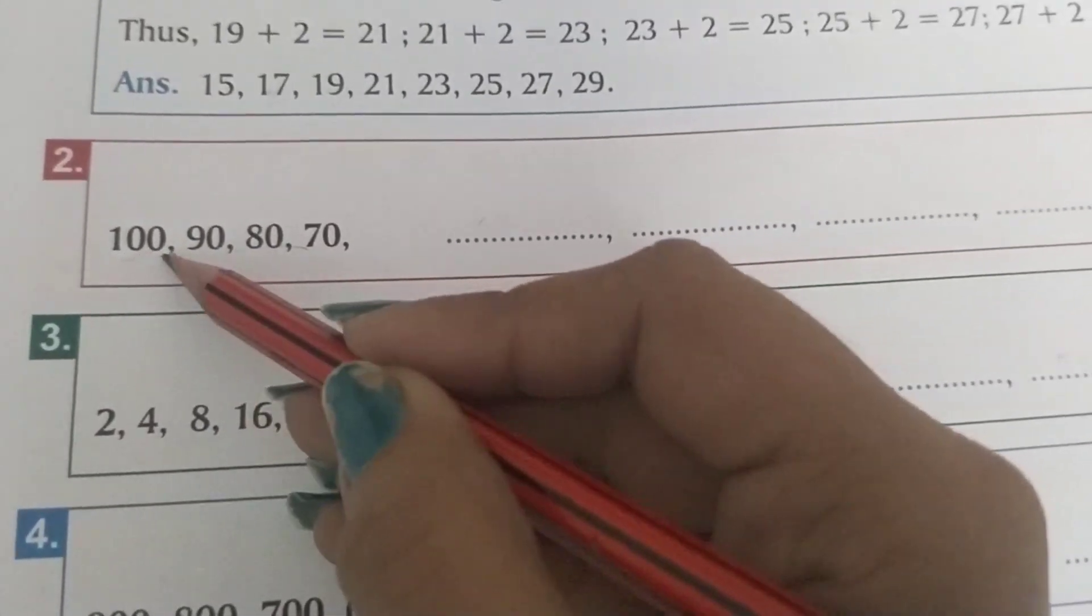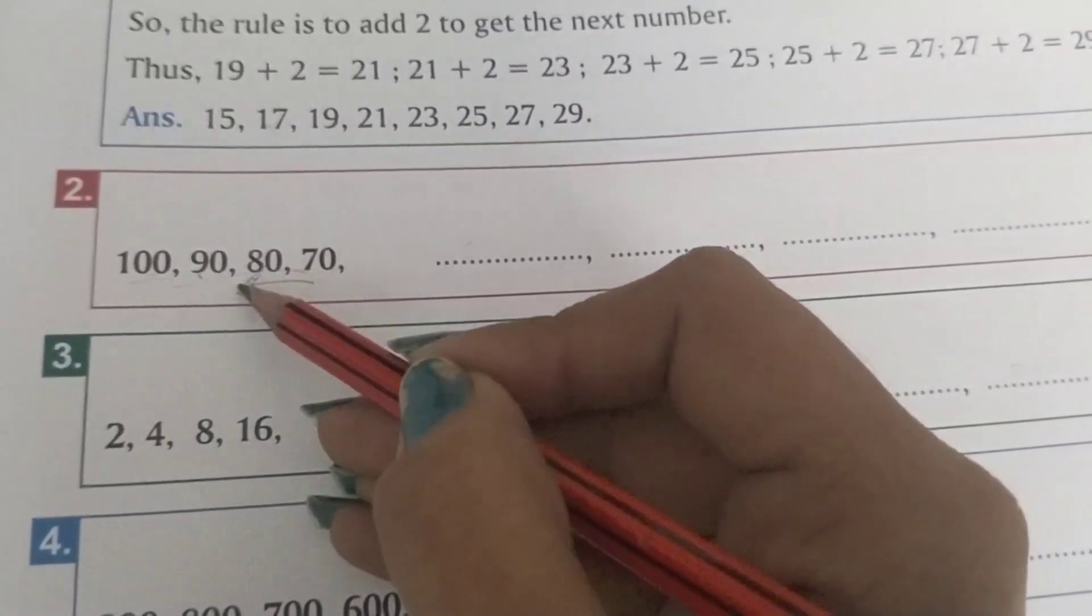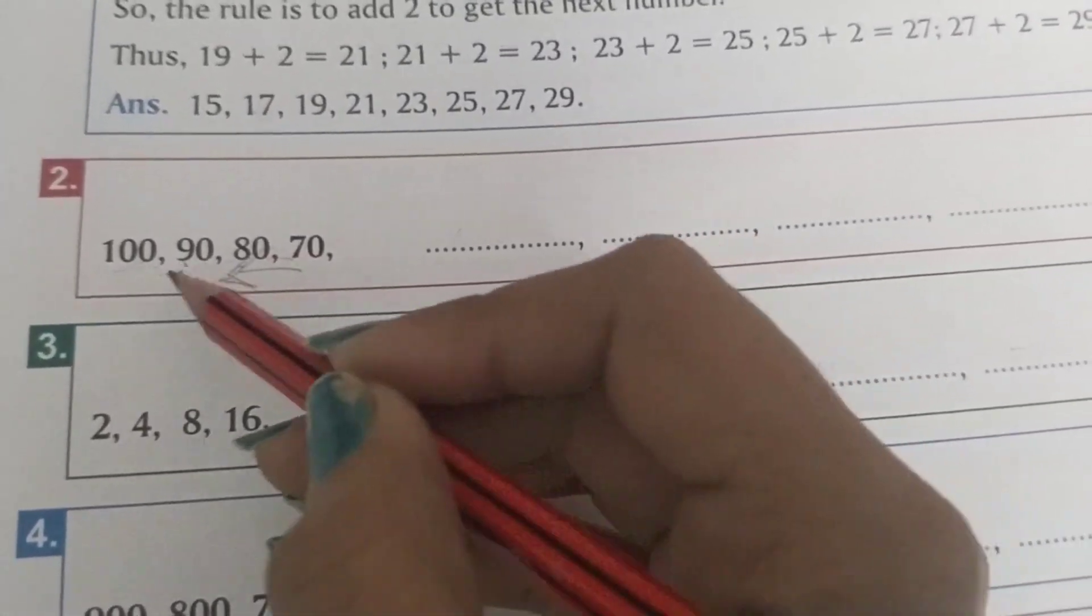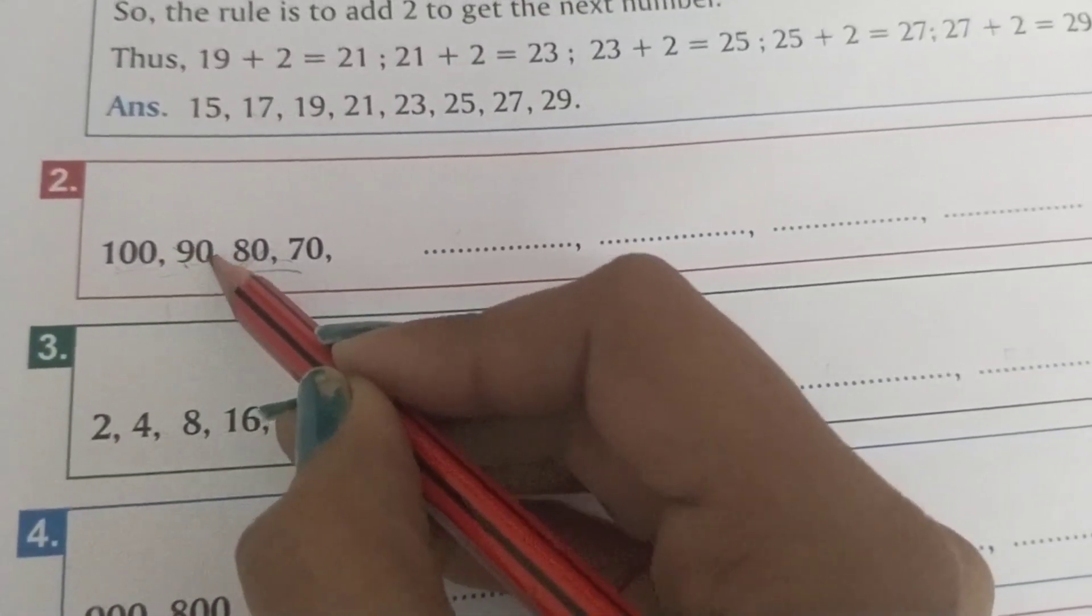100, 90, 80. It means they are in a decreasing, descending order. 100 minus 10, 90 minus 10, 80, 70. Backward counting is there. 50, 40, and 30, so on.